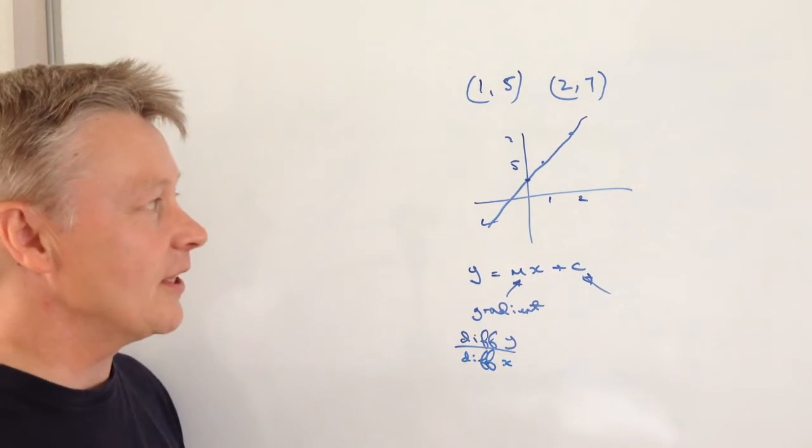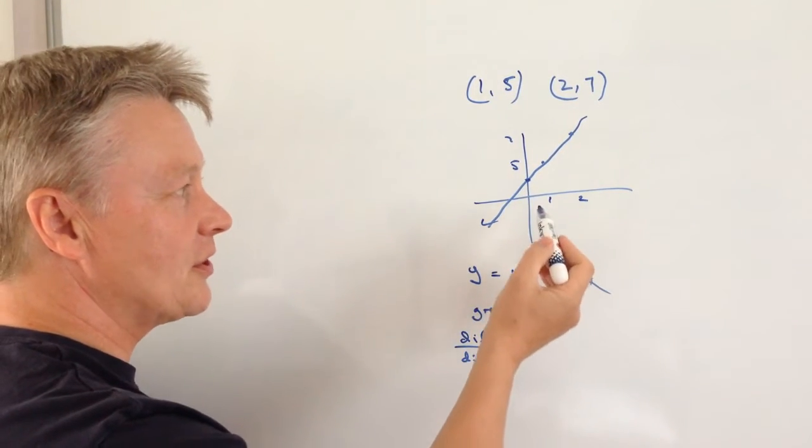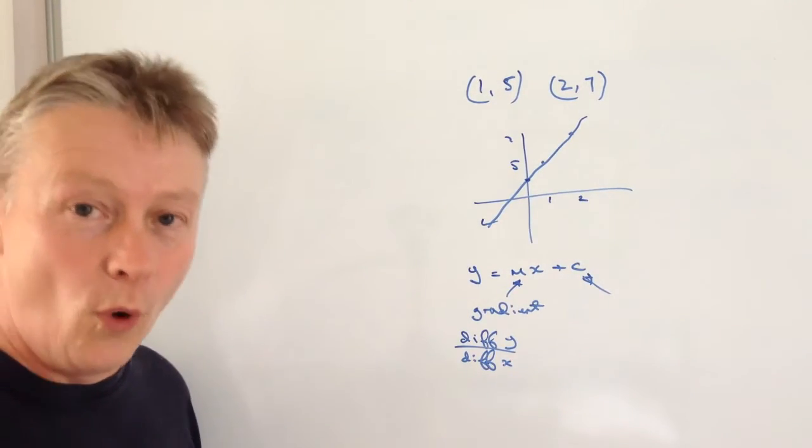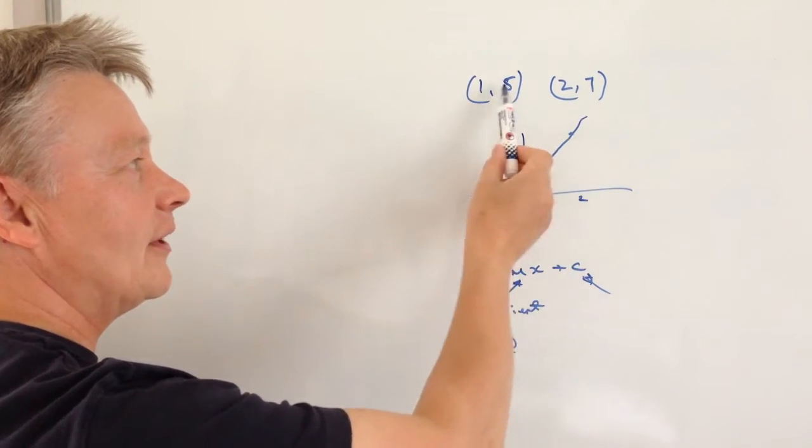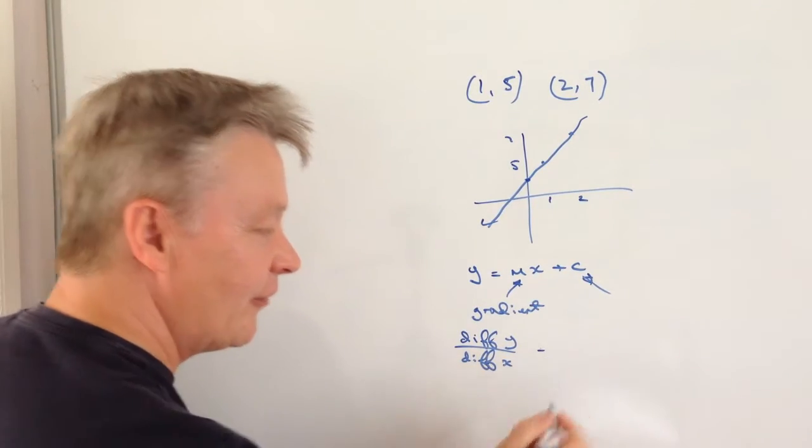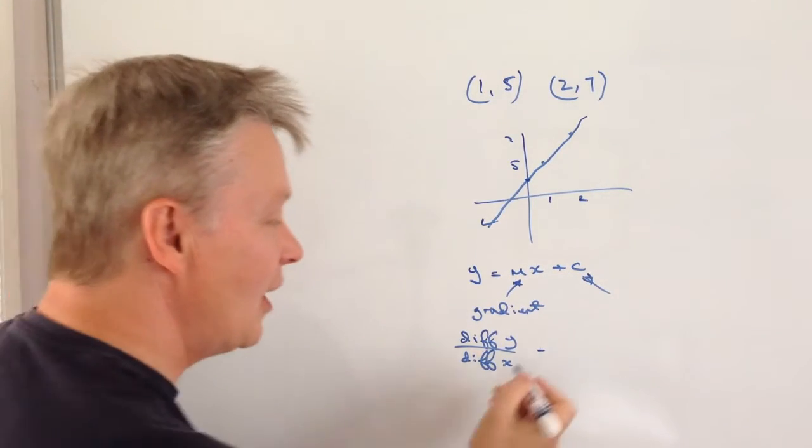Okay, so what we're going to do is if we have a look at this, you'll see here we've got two coordinates. Well the y values are 7 and 5.